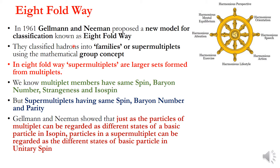They classified all hadrons into families or supermultiplets using the concept of group theory. In the Eightfold Way, supermultiplets are larger sets formed from multiplets — that is, many multiplets form a supermultiplet. Multiplet members have the same spin, baryon number, strangeness, and isospin.